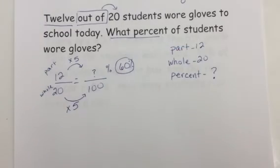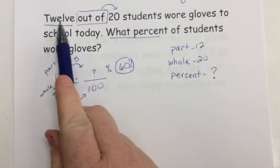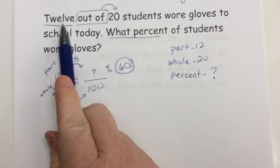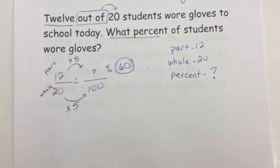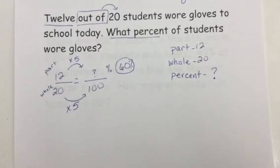Now, I would know that should be about correct, or about the right answer. I can estimate, because 10 out of 20 would be half, and that's 50 percent. So we're a little bit larger with 12 out of 20.